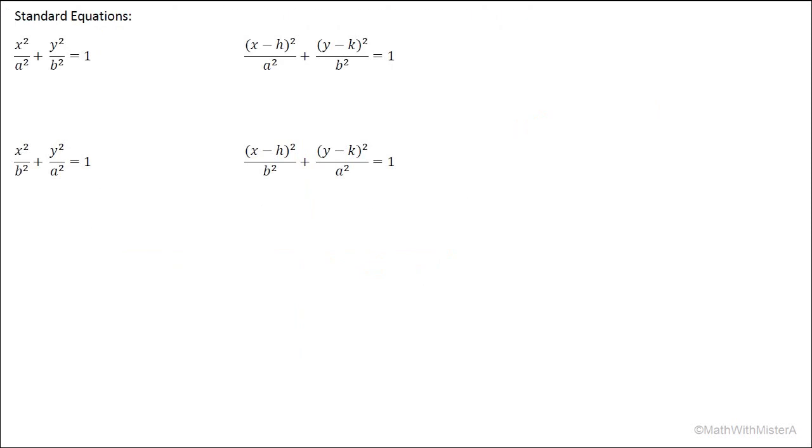Now let's look at four standard forms of an equation for an ellipse. I'd first want to point out that we do see an X squared plus Y squared, which is pretty similar to what we saw for the equation of a circle, but now we have the variables in fractions. And in the denominator is where we're seeing those quantities A and B.